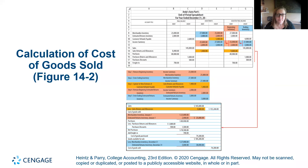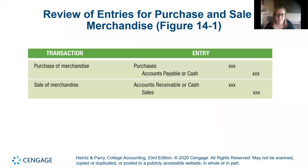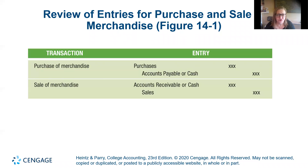When we're starting merchandising, in the perpetual system, rather than just recording the sale, you also have to record the costs related to it. So when you make a sale, you need that second entry to capture the cost of goods sold — that's something we talked about a little bit in another chapter.